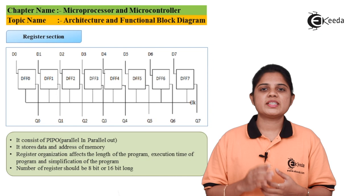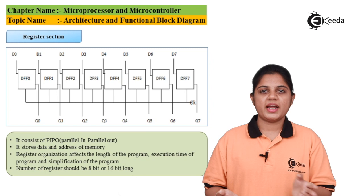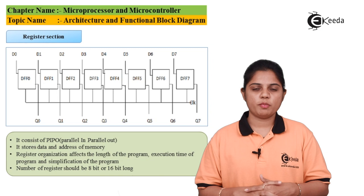We have different types of register organizations: serial in serial out, serial in parallel out, parallel in serial out, right shift, and left shift. These are many types of organization available to connect flip-flops to form a register so that the word length can be stored. Here we have parallel in and parallel out.